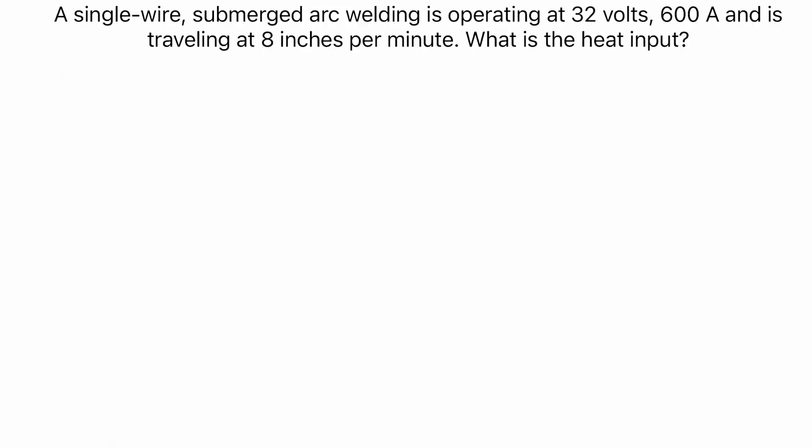So a single-wire submerged arc welding is operating at 32 volts, 600 amperes, and is traveling at 8 inches per minute. What is the heat input? So you have the given here: 32 volts, 600 amperes, and 8 inches per minute.